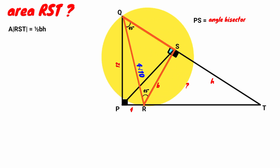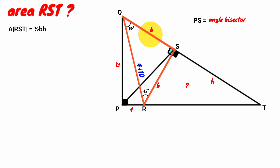Now look at triangle RST. It is a right angle triangle and two of its angles are 45° each, which makes it an isosceles right angle triangle. This means this side and this side are congruent. So since one side is B, the other must also be B. We apply the Pythagorean theorem: since QR (length 4√10) is the hypotenuse, the square of its length must equal the sum of B² + B².